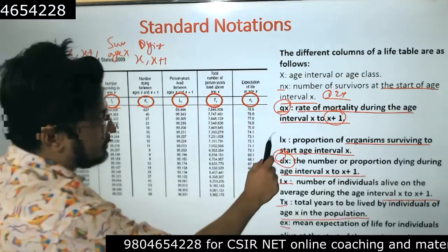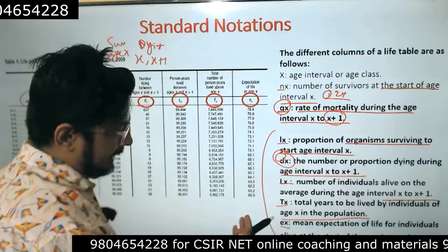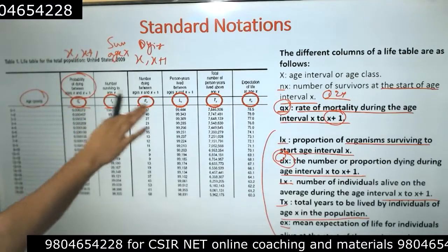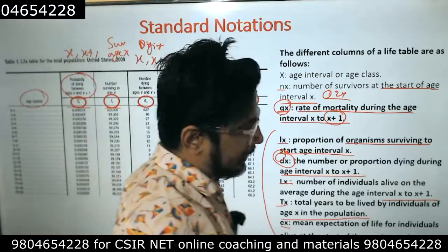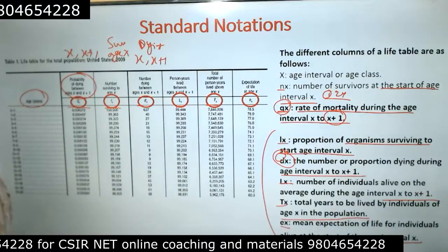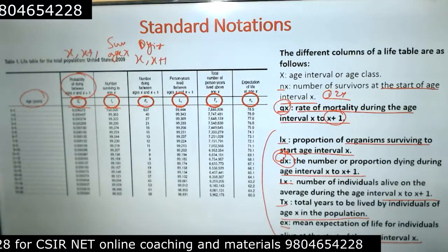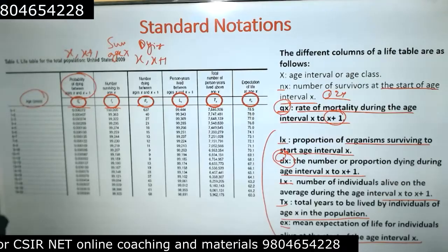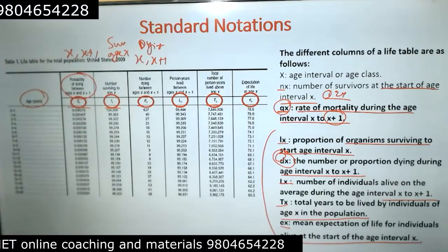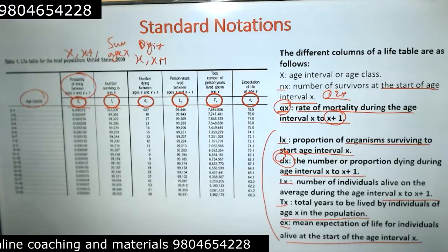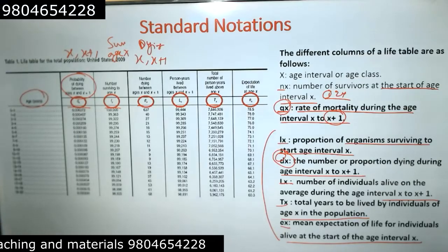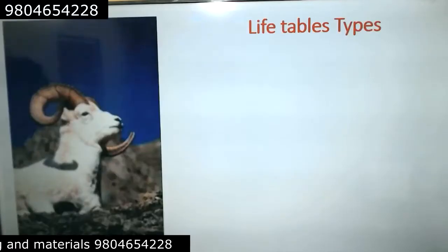The key variables are lx, dx, and ex. Formulas will be provided with the table, and you just need to calculate the values. These questions were asked more often before, but in CBT mode these tables are not easily visible on the same screen, so questions have changed. Still, you should understand all the components of a life table and why it is important.